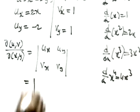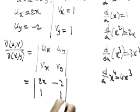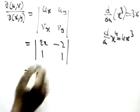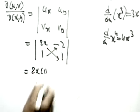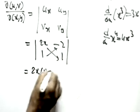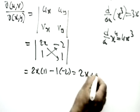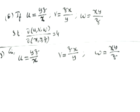Substituting the values into the 2×2 determinant: [2x, -2; 1, 1]. Cross-multiplying: (2x)(1) - (1)(-2) = 2x + 2. So ∂(u,v)/∂(x,y) = 2x + 2, which is the required answer.